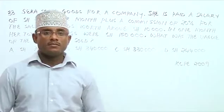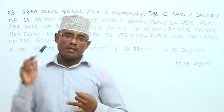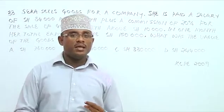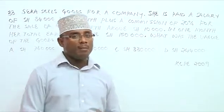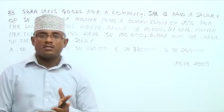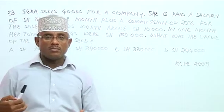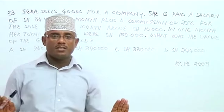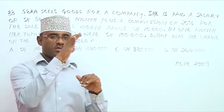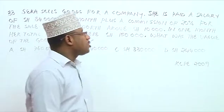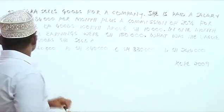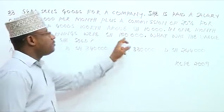Sarah gets every month a salary of $84,000 plus a commission. But the commission applies only on sales above $10,000. If she sells $10,000 or below, she's not getting any commission. Only sales above $10,000 earn commission — not including the $10,000 itself. The commission rate is 20%. In one month, her total earnings were $150,000.